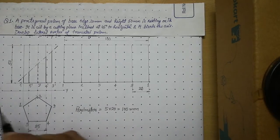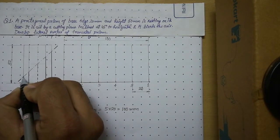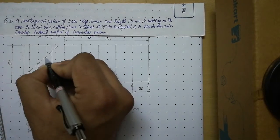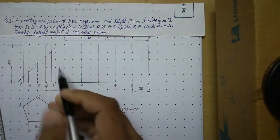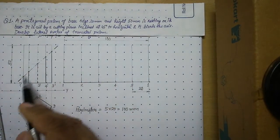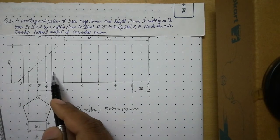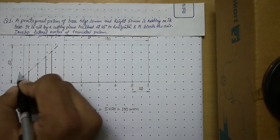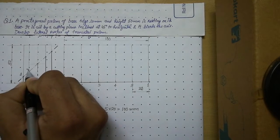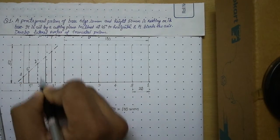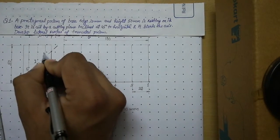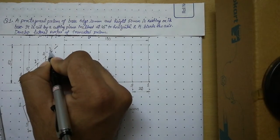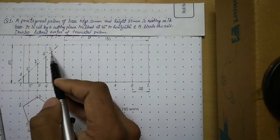We have to apply the parallel line method. We have to name the intersections obtained between the cutting plane and the edges of the prism. This particular edge is labeled as 1, this edge is 5, this will be 2, this edge is 4, and this edge is 3 — so this intersection will be 3.